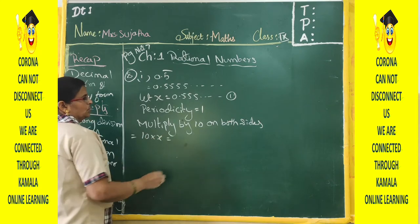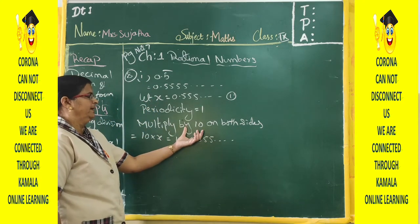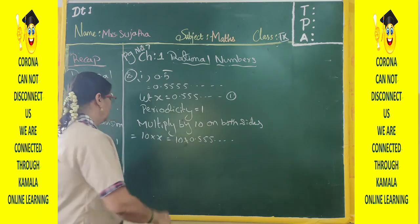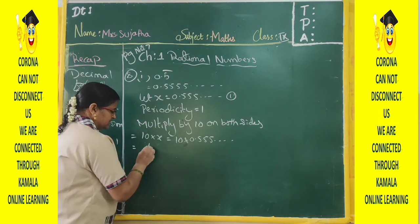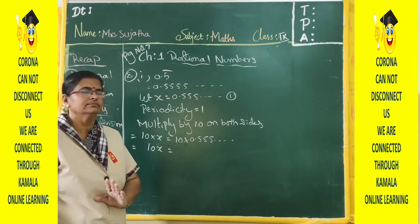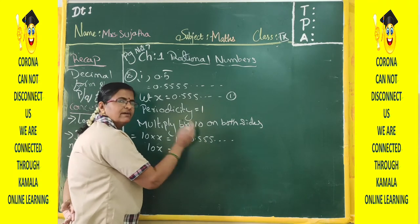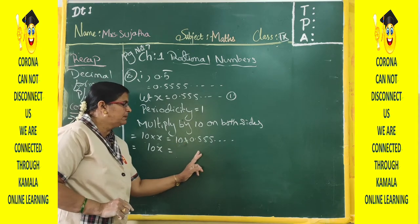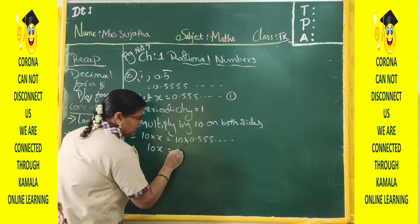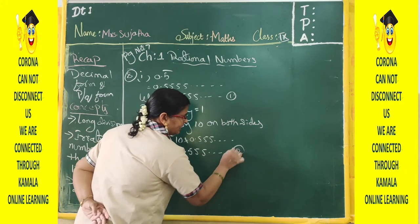So 10 times x equals 10 times 0.5555 and so on. When you multiply by 10, the decimal moves one place. So you get 10x equals 5.5555 and so on. Call this equation 2.